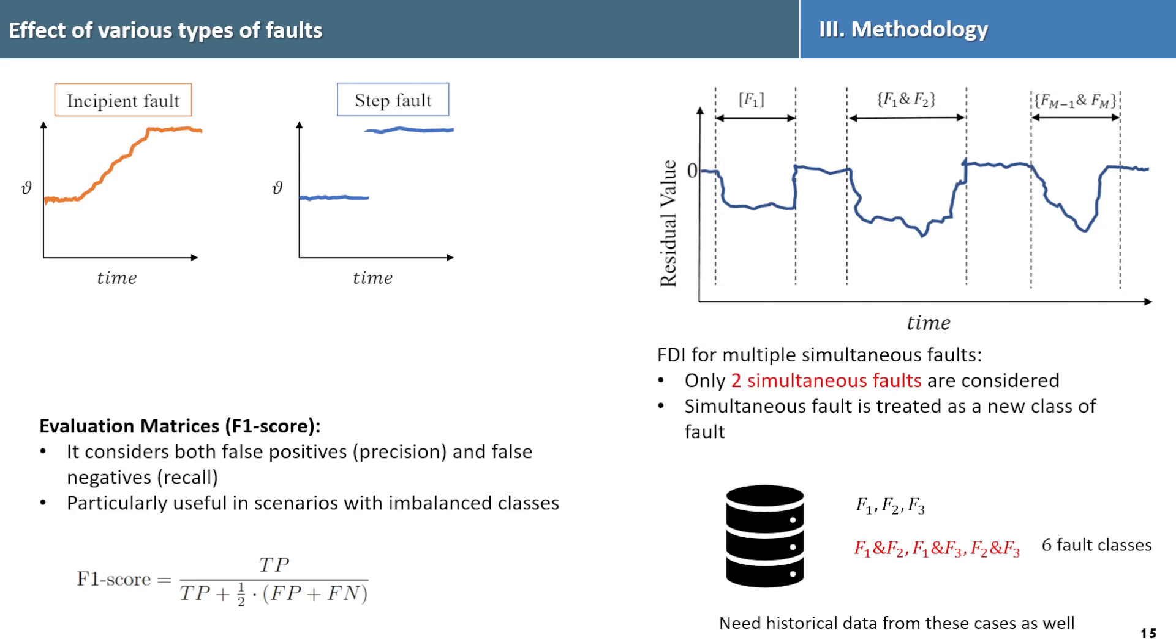Moving on to the evaluation matrix, we opted not to use accuracy, but F1 score as it provides a balanced assessment by considering the trade-off between false positive rate and negative rate. This score ranges from 0 to 1 where 0 indicates worst performance and 1 signifies the best.